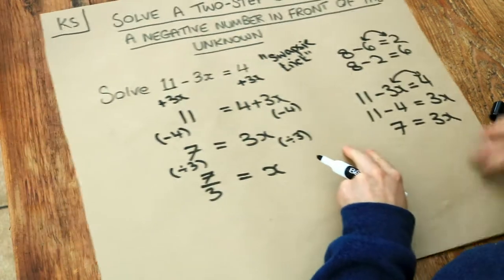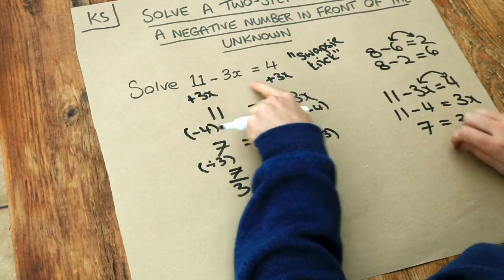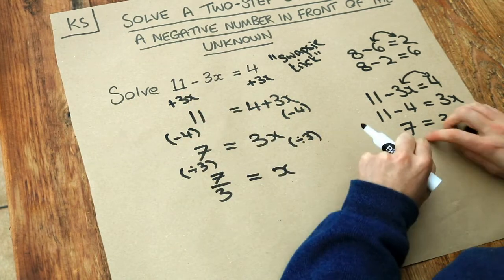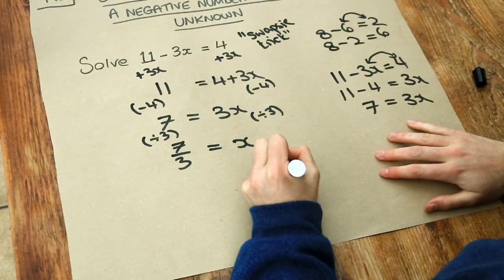Another thing that some people do is they just leave the minus 3x where it is, and they subtract 11 from both sides to get rid of that 11. So we do it that way instead.